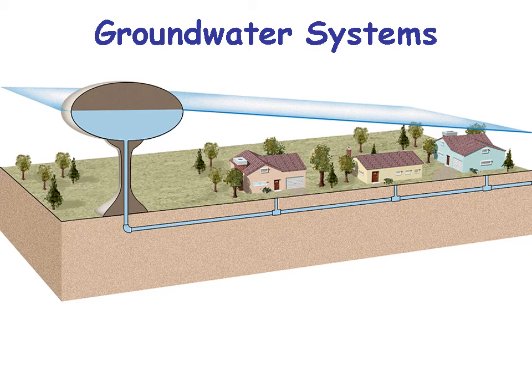You can think of the water tower in your town as a groundwater system — it delivers water using the same exact principles. A water tower creates water pressure, but as houses are located farther from the tower, eventually there isn't enough pressure, so you put in another water tower. We're using the same principles for the water tower as for groundwater systems.